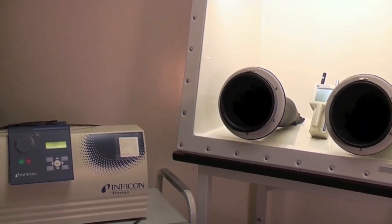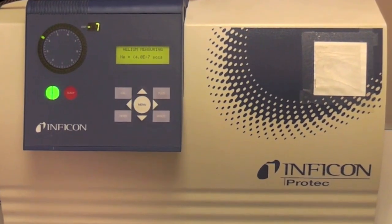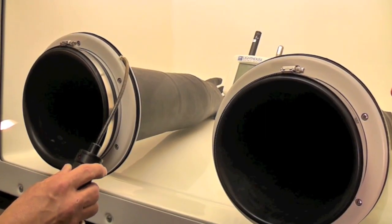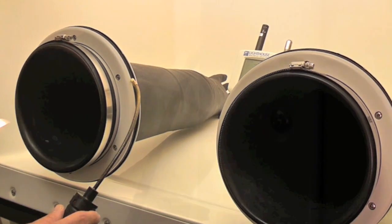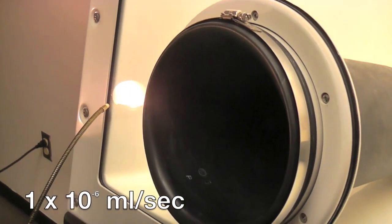Each glove box is leak-tested with a mass spectrometer while pressurized with helium at 1 inch of water gauge and shown to have no detectable leaks greater than 1 x 10⁶ mils per second.